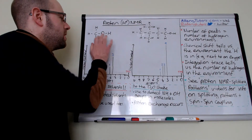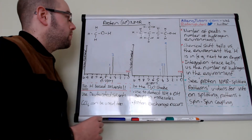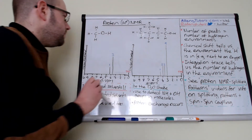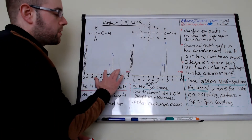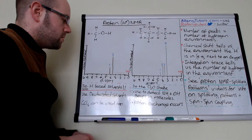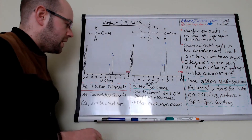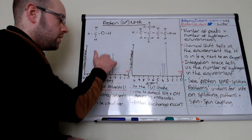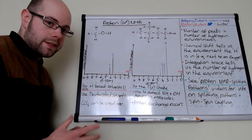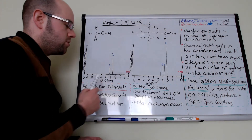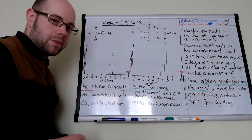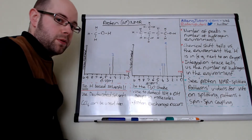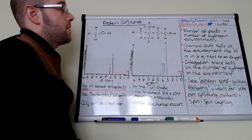So we're going to start with methanol and look for the environments first. We've got the spectra here and the numbers show us the integration. You'll sometimes see it as an S-shape on the actual NMR spectra with a number above it — that number tells us the integration, or in other words, how many hydrogens are in that environment. You can see here we've got two peaks, so this tells us that we have two environments in this molecule.